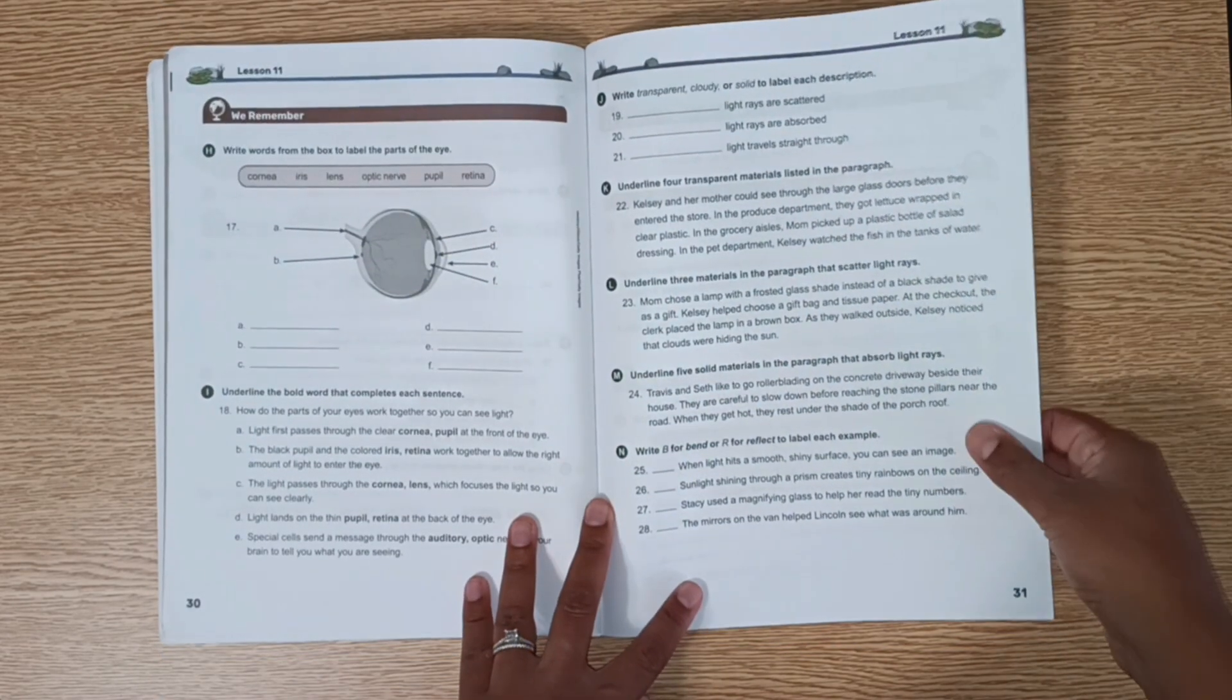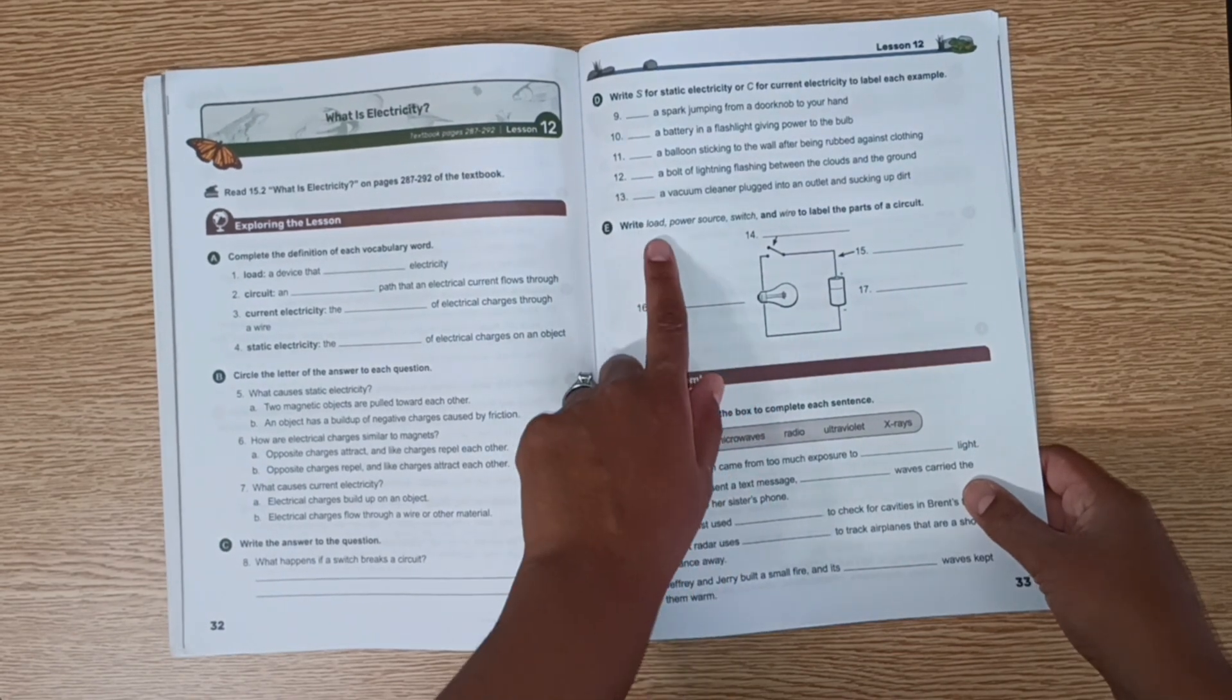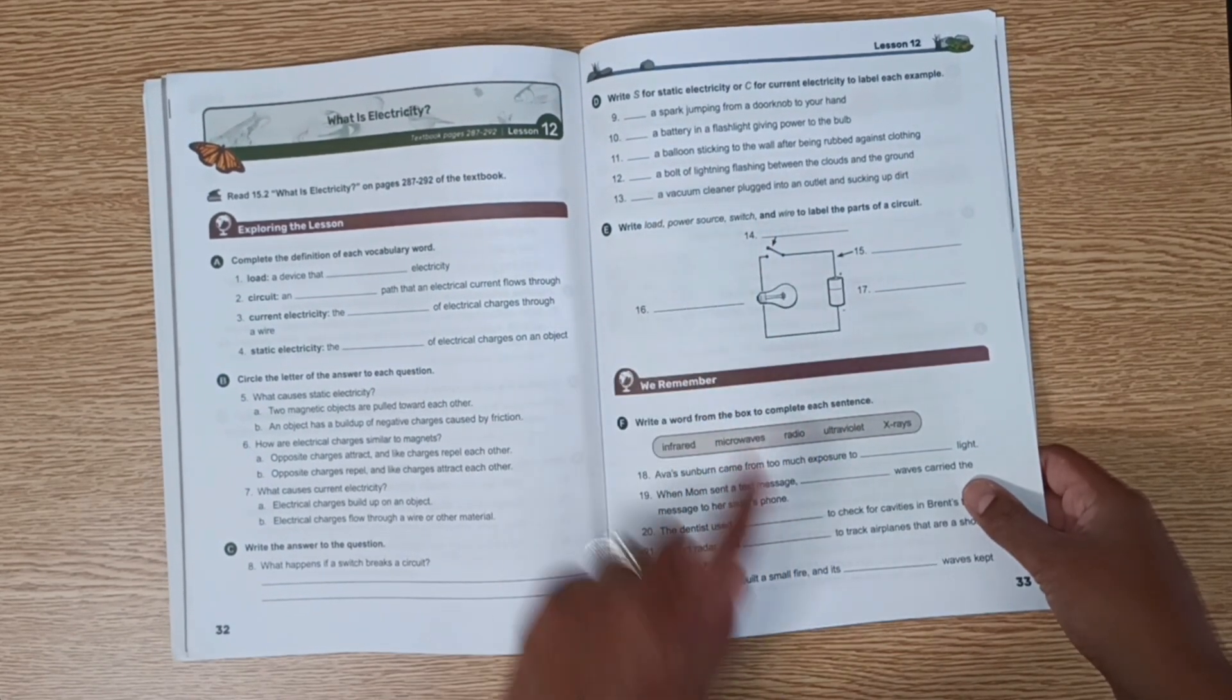Lesson about magnetism. Parts of the eye. And here electricity. Labeling the load, power source, switch, and wire in the parts of a circuit.